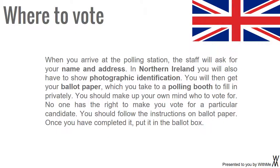When you arrive at the polling station, the staff will ask for your name and address. In Northern Ireland you will also have to show photographic identification. You will then get your ballot paper, which you take to a polling booth to fill in privately. You should make up your own mind who to vote for; no one has a right to make you vote for a particular candidate. You should follow the instructions on the ballot paper. Once you have completed it, put it in the ballot box.